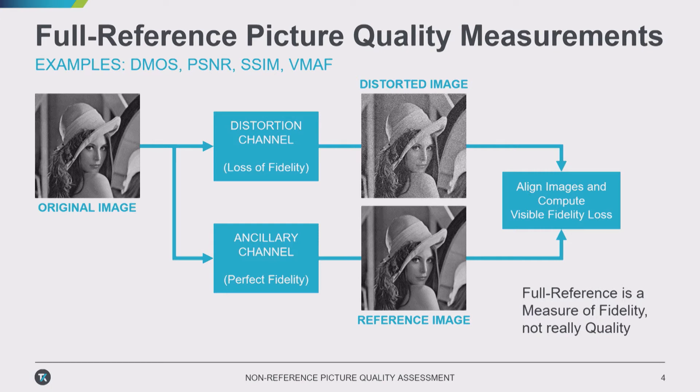The key thing about a full reference measurement is you actually have two copies of the material: our original source and the distorted or modified version. Each of those algorithms is essentially a comparison metric — it uses pixel values from both images and makes a measure of the difference between them. So really, it's more of a fidelity measurement than a quality measurement.